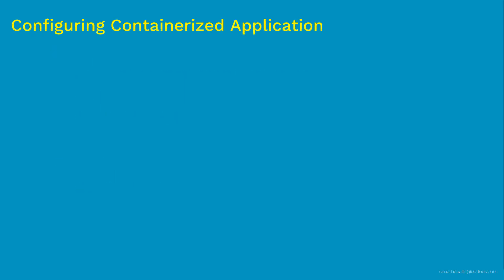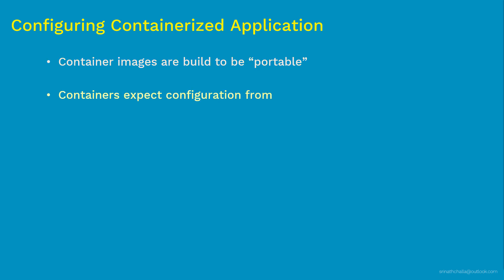Generally, when you build any container image, you need to make sure the image is portable and shared with others using common platforms such as Docker Hub or your private registries. As needed, these images will be downloaded from these registries and launched within your own environment. One important question is: how can you make these containers portable? That's possible by separating the container image from its custom configuration. This custom configuration is different from company to company, and we apply it at the time of starting the container.